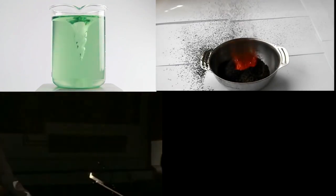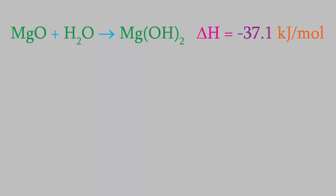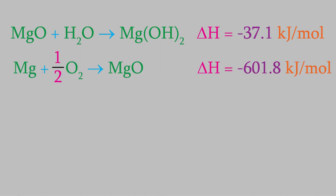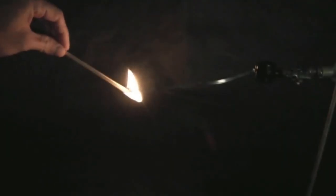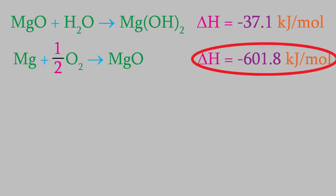The second principle we need is also fairly simple. Let's look at the magnesium oxide and water reaction again, alongside a second reaction in which magnesium metal reacts with oxygen to form magnesium oxide. You might recognize this one from the lab — the reaction gives off an intense white light. Its enthalpy is a large negative number: negative 601.8 kilojoules per mole of magnesium oxide formed, confirming it is exothermic.